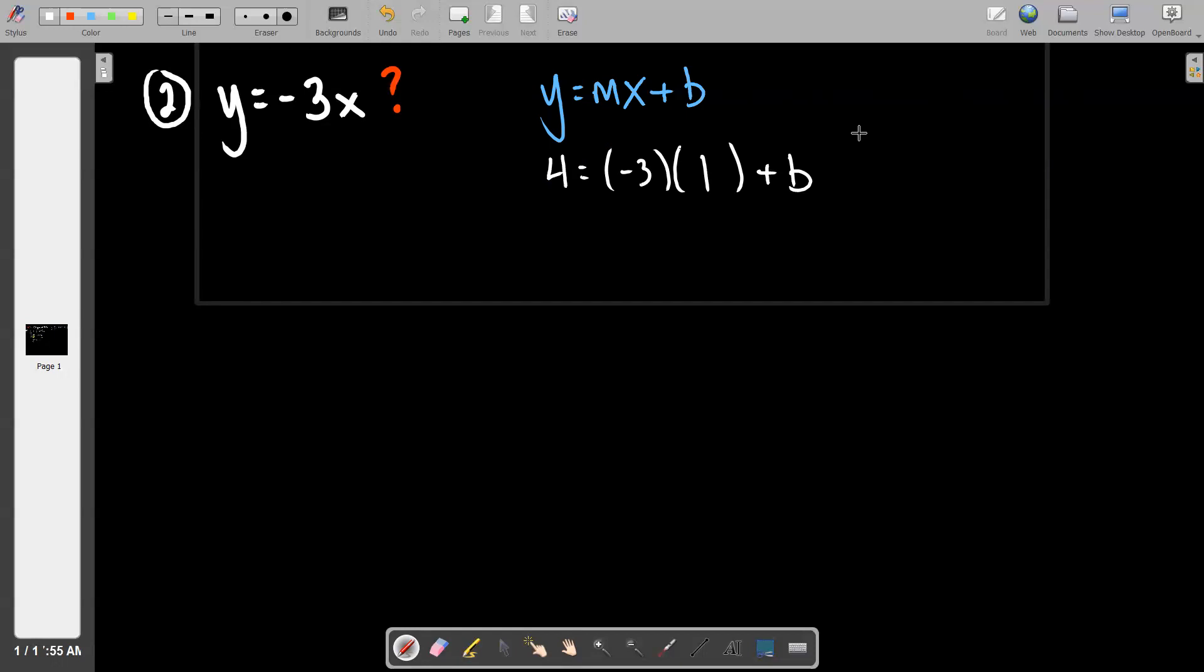All I've done so far is just literally substitute y, m, and x. Then we're going to do a little bit of basic math. We know that negative three times one is equal to negative three. We're going to add three to both sides, which is going to give us our b value, which is seven. Remember up there about a minute and a half ago where I had that red question mark? I can now get rid of the red question mark and in its place I can put plus seven, and I'm done.